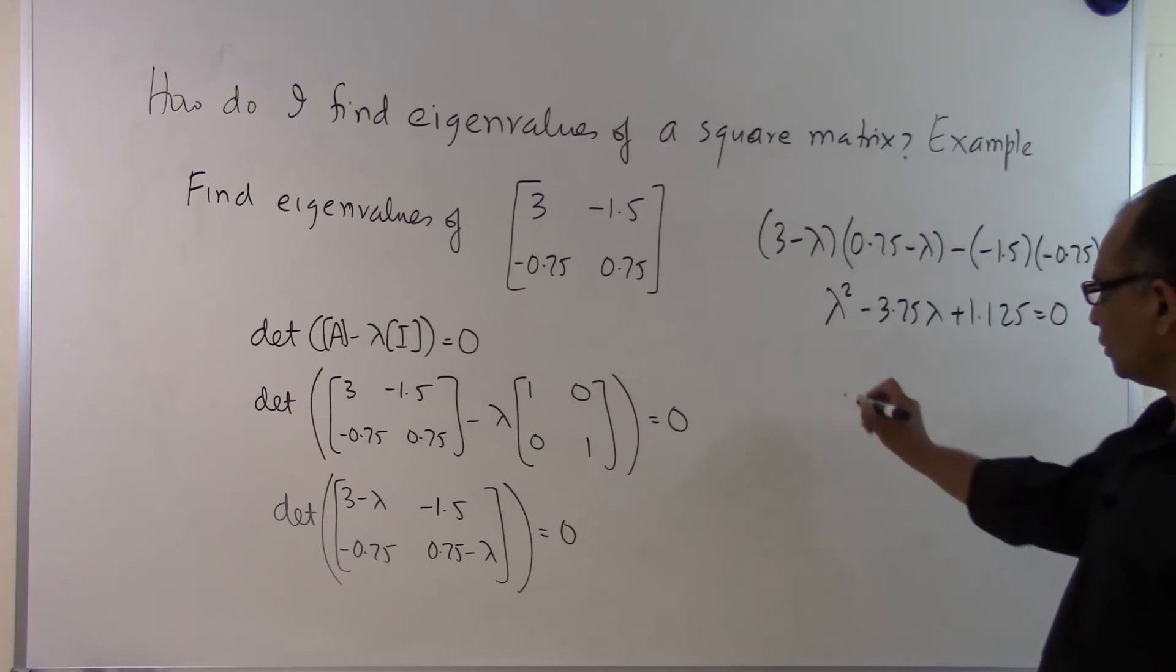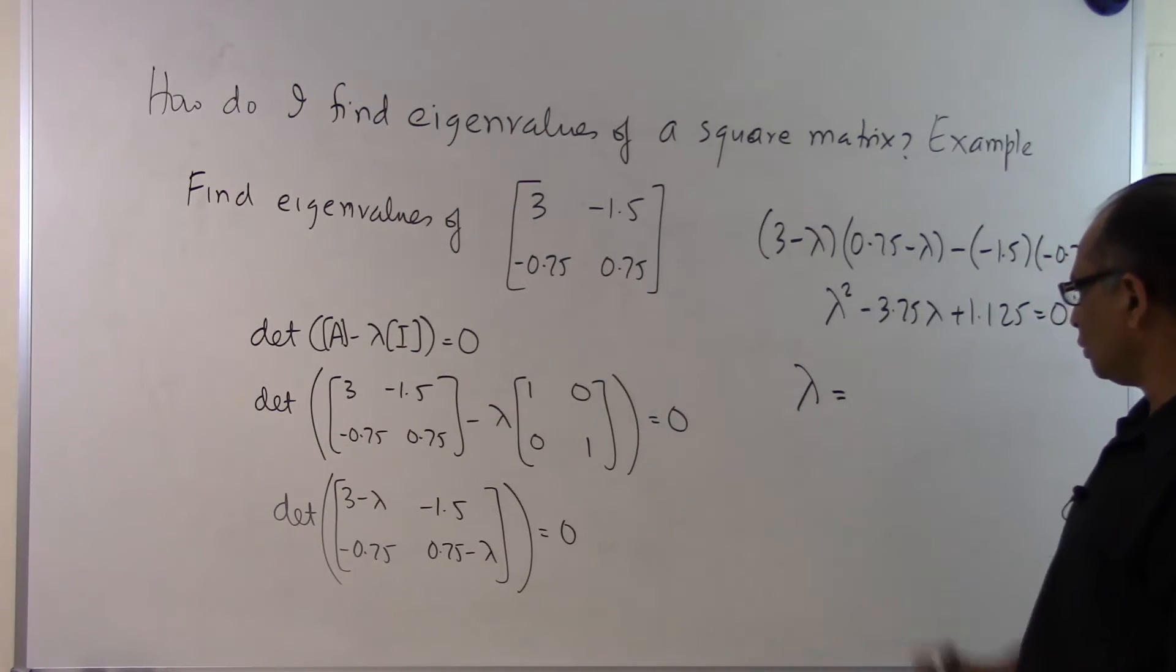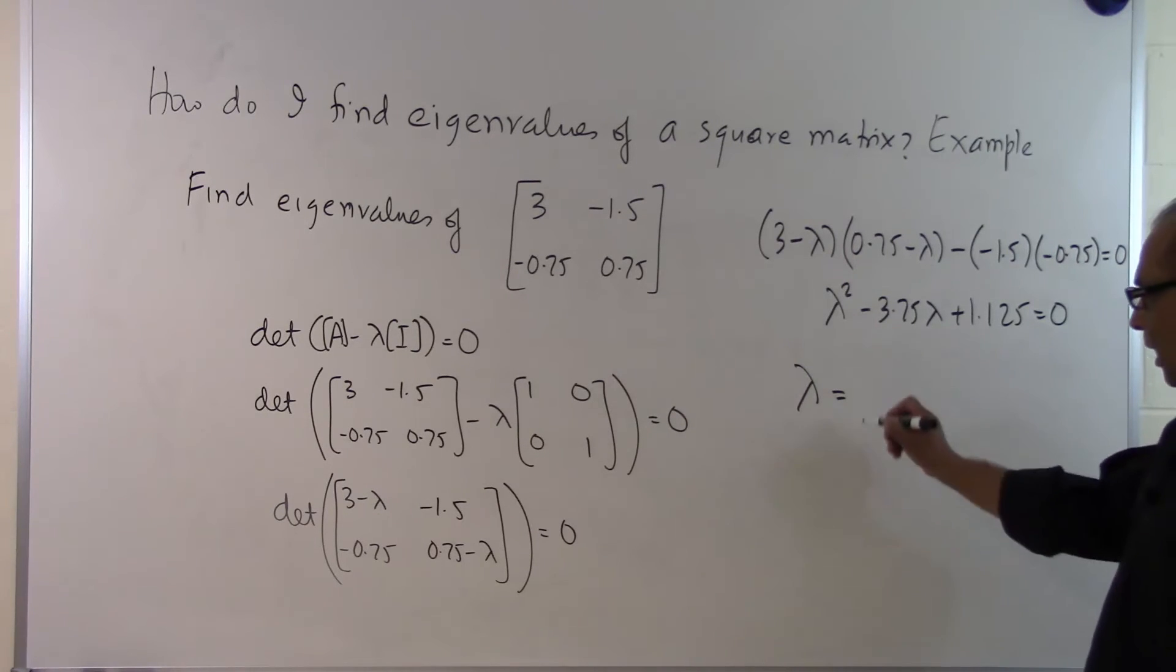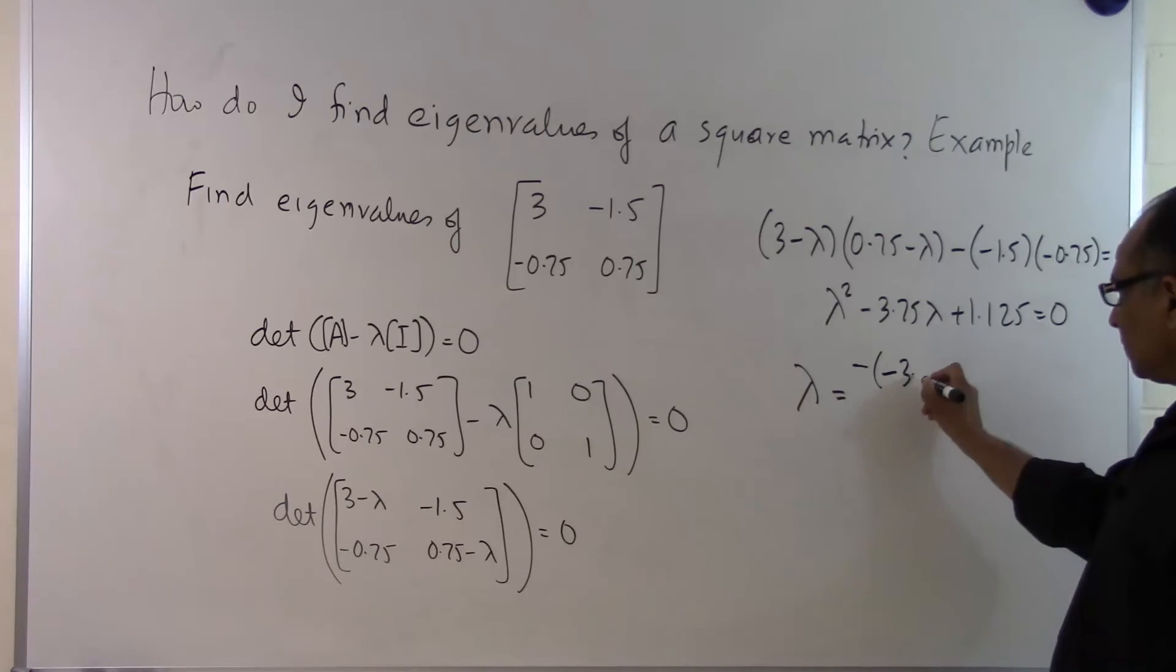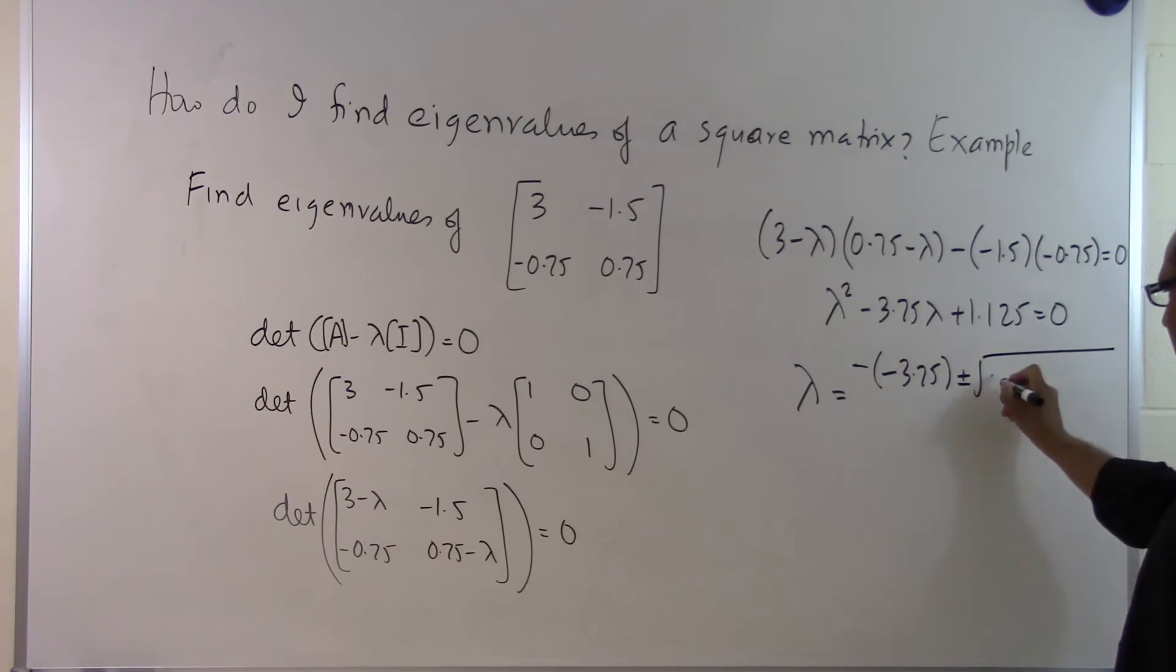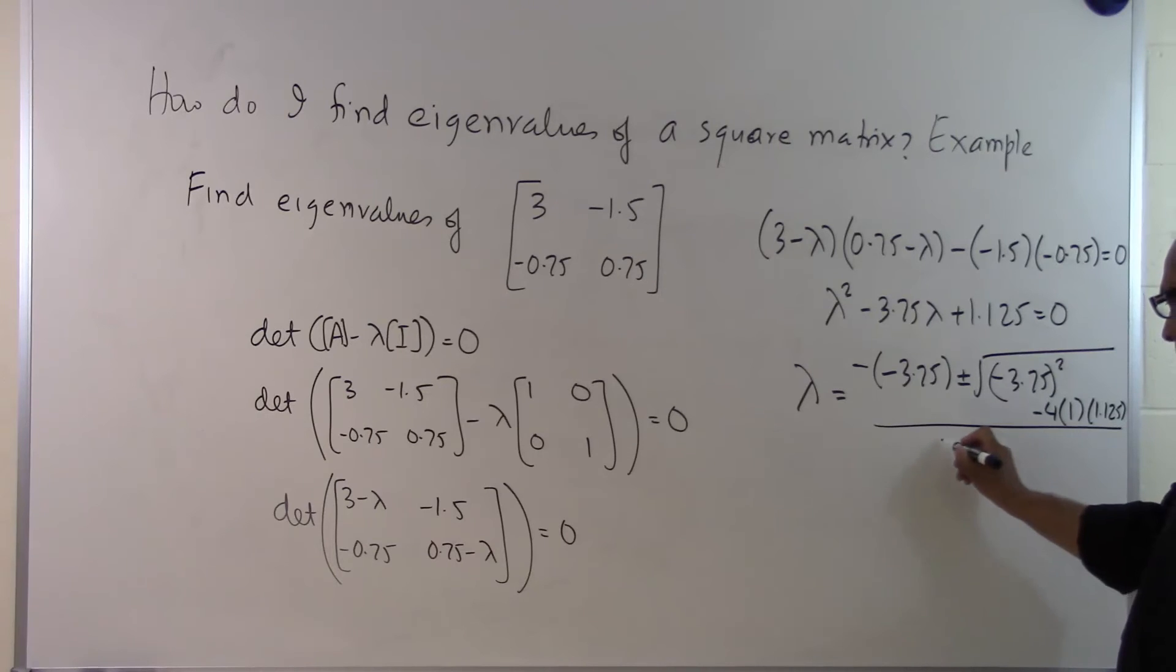Everyone knows how to solve a quadratic equation. We have λ = (-b ± √(b² - 4ac)) / 2a, where b = -3.75, a = 1, and c = 1.125, divided by 2 times 1.